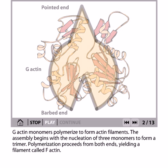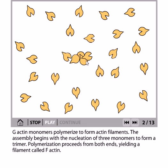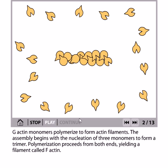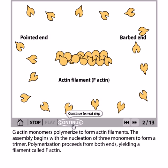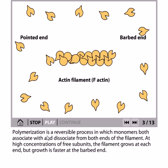The polymerization proceeds from both ends, yielding a filament called F-actin. First, the monomers interact to make the nucleus, which is a trimer, and then it elongates to make the F-actin filament, also called filamentous actin. The polymerization is a reversible process in which monomers both associate with and dissociate from both ends of the filament. At high concentration of free subunits, the filament grows at each end.